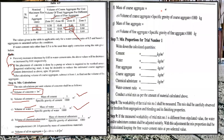Mass of coarse aggregate = volume of all-in aggregates × volume fraction of coarse aggregate × specific gravity of coarse aggregate × 1000 kg. Similarly, mass of fine aggregate = volume of all-in aggregates × volume fraction of fine aggregate × specific gravity of fine aggregate × 1000 kg. The final output of step six is the mix proportions per cubic meter: cement, water, fine aggregate, coarse aggregate, and admixture, along with the water-cement ratio.